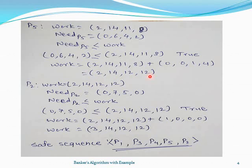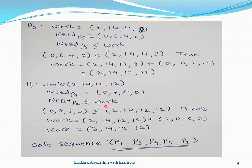Now, as previously noted, P2 was in a waiting state due to insufficient resources. That's why we will now check whether the condition of need and work is satisfied for P2. We repeat the same procedure with work value [2, 14, 12, 12]. The need of P2 is [0, 7, 5, 0]. After comparing need of P2 with the current work, the condition becomes true and we modify the value of work. This means we can now allocate the resources to process P2.